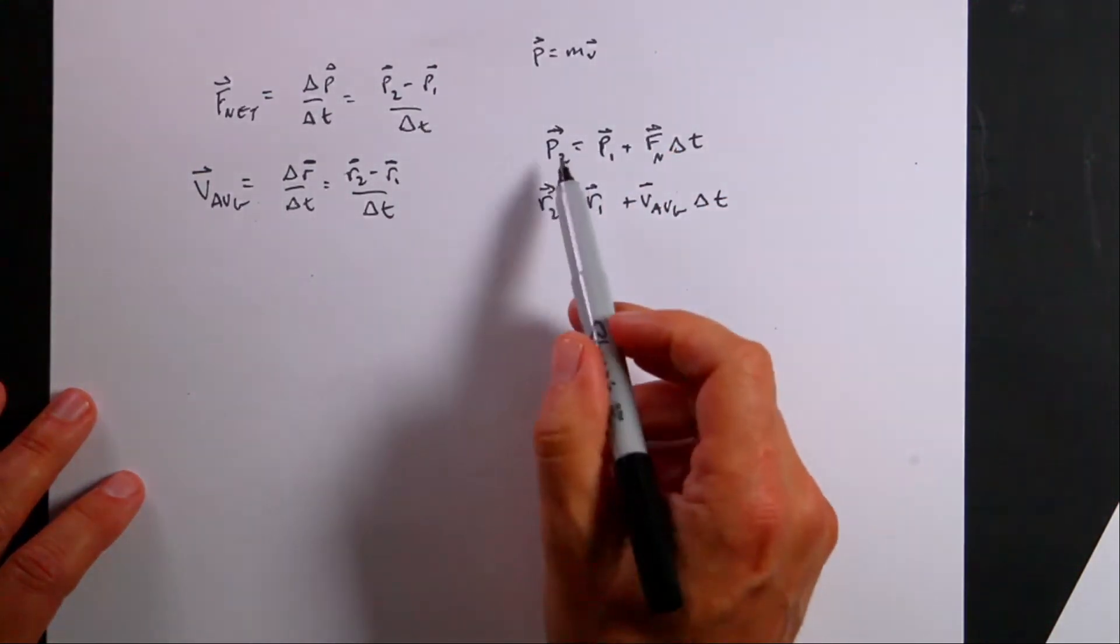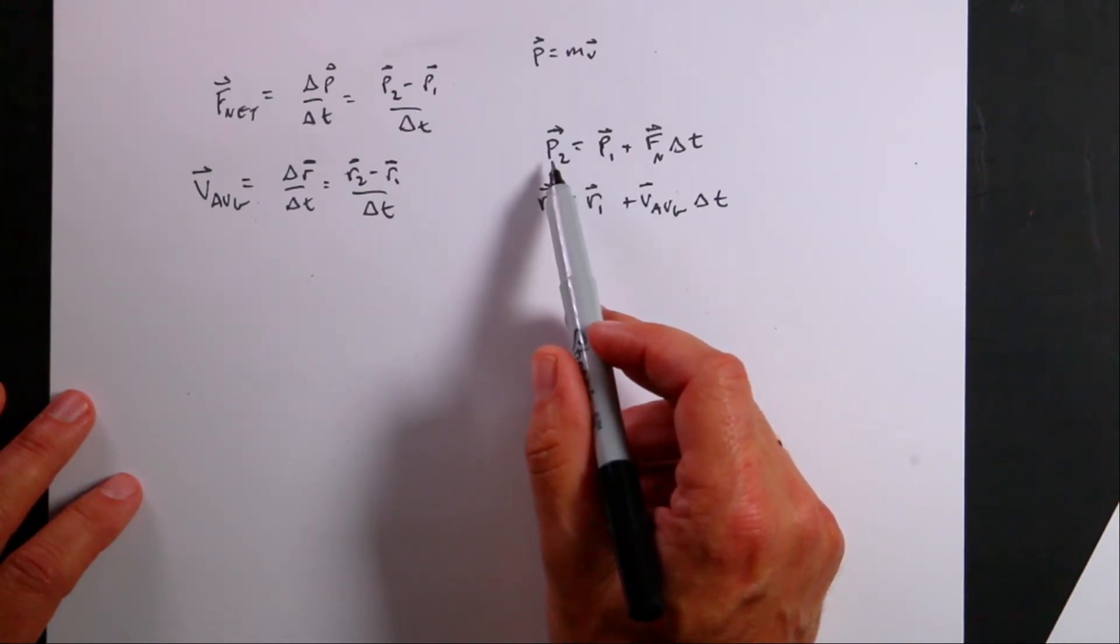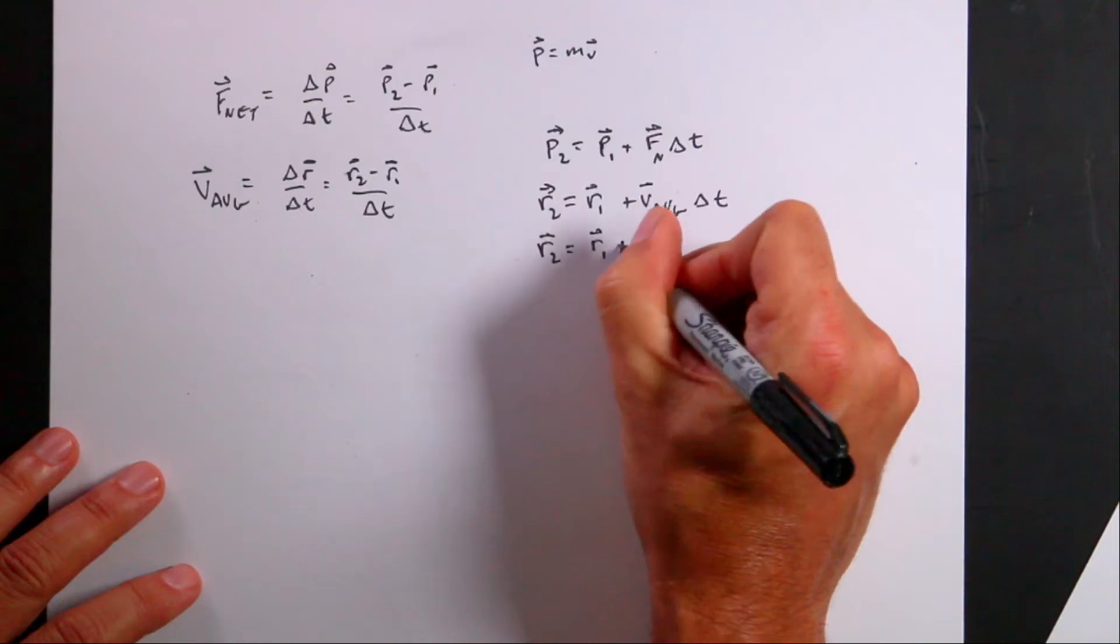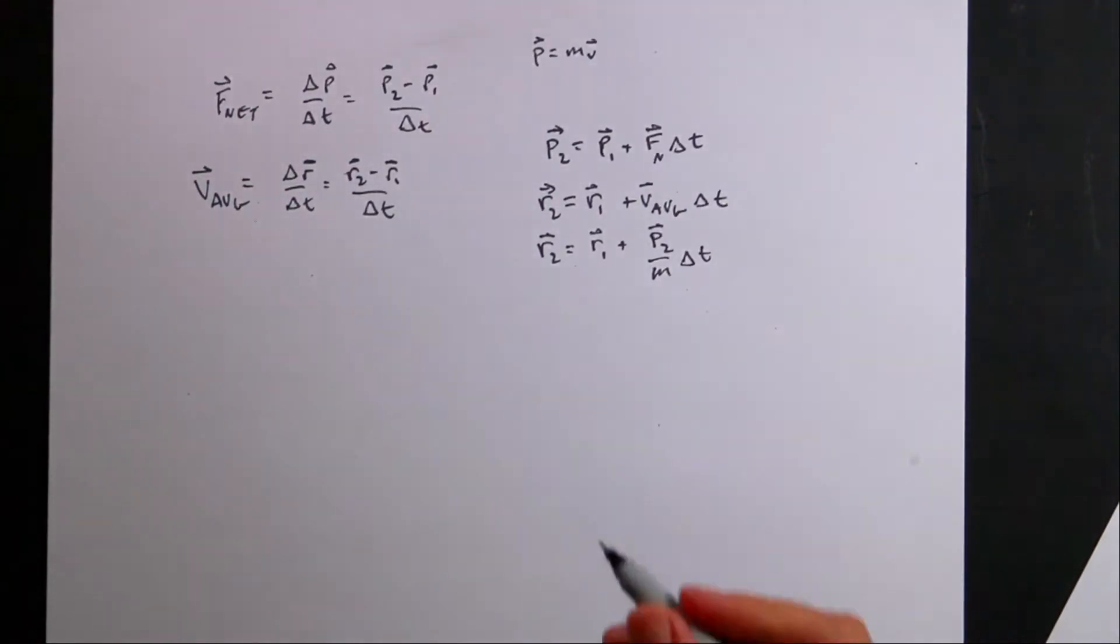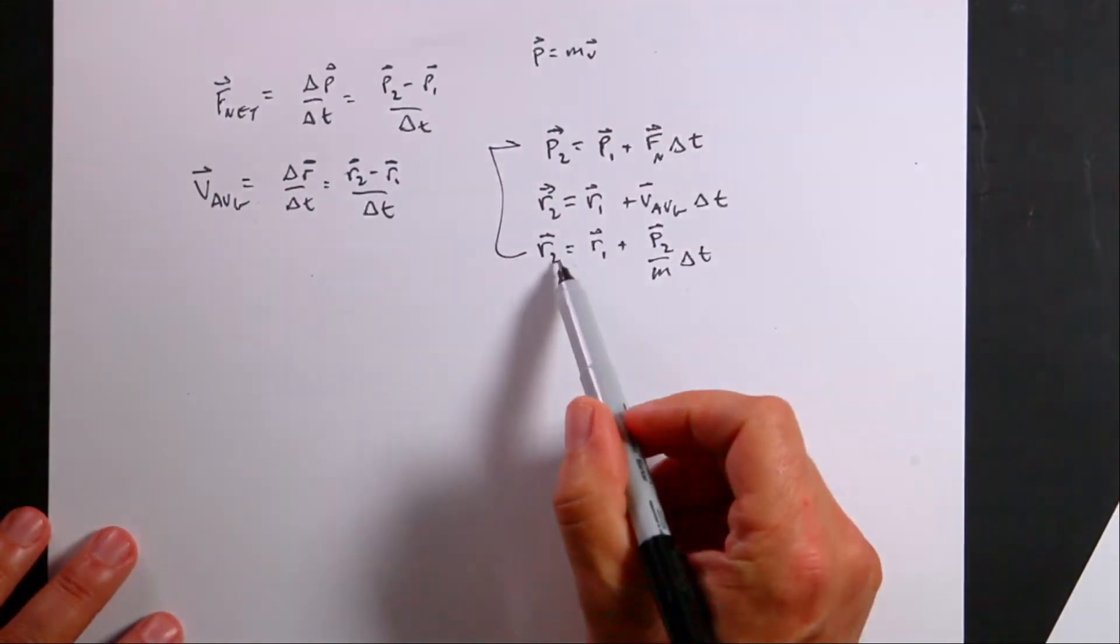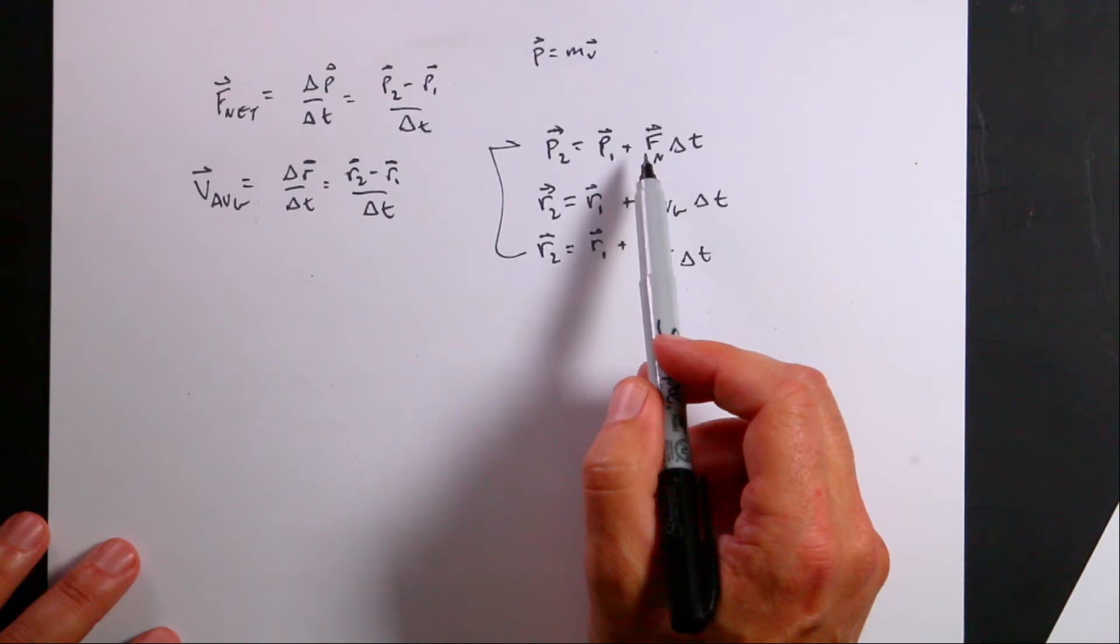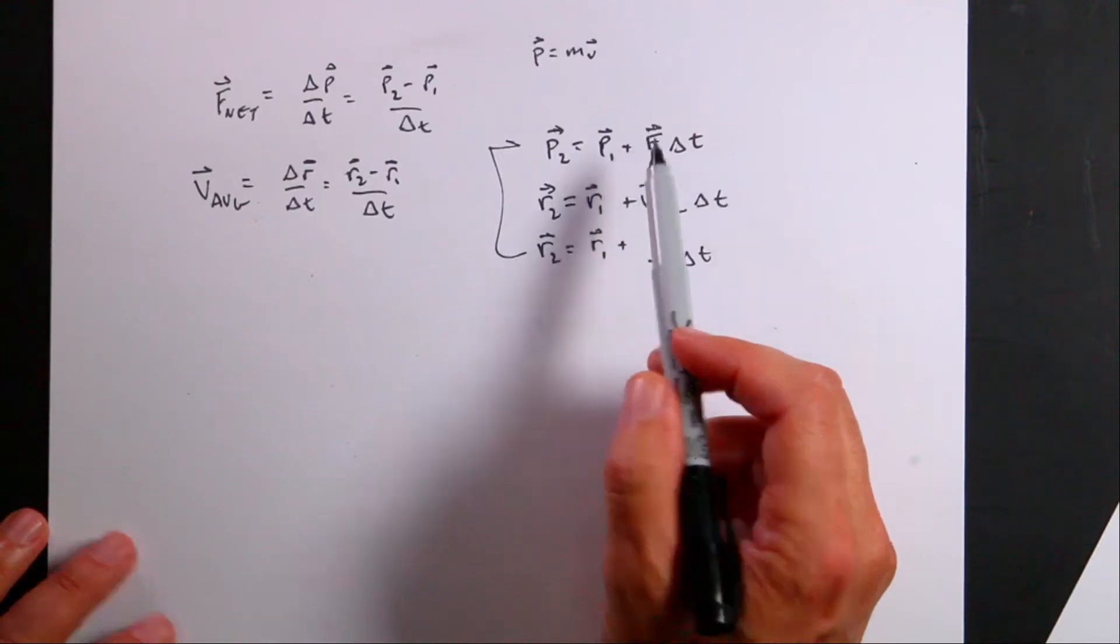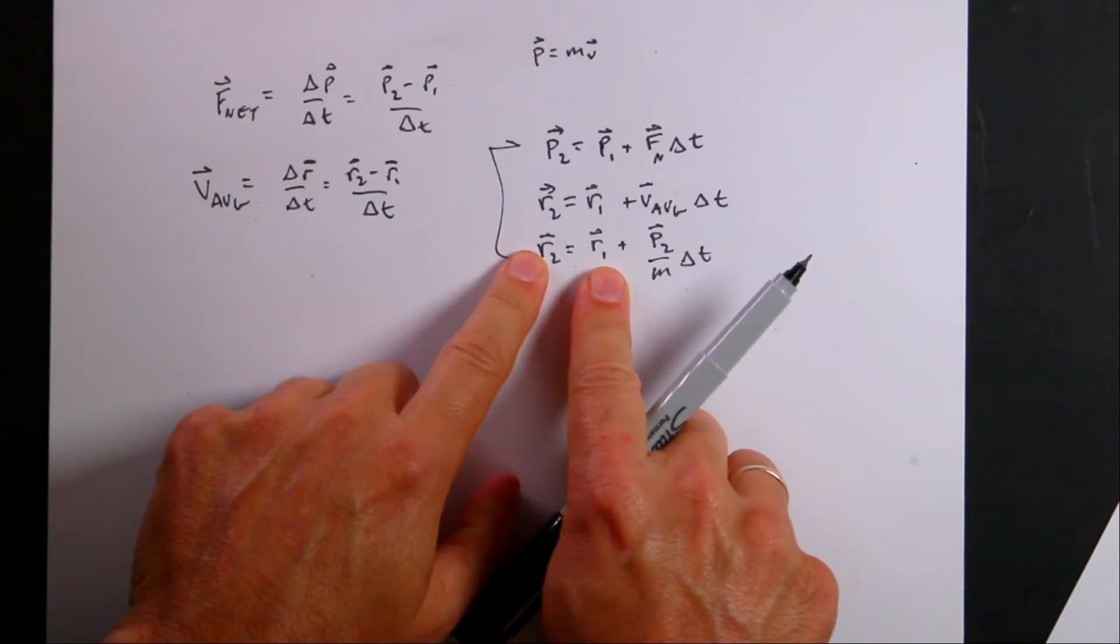So R is the position vector of the object. R2 is the position at the end of the time interval and R1 is the position at the beginning of the time interval. This is the average velocity. So I could solve this for R2 and I get R2 equals R1 plus V average delta T. Now let's do a trick. So I just calculated the final momentum. So instead of the average velocity, I'm going to use the final momentum divided by the mass because that would be the final velocity. So I can say R2 equals R1 plus P2 over M delta T.